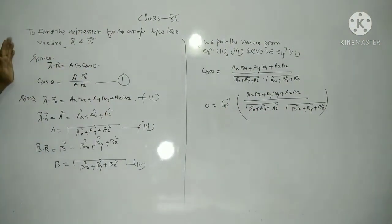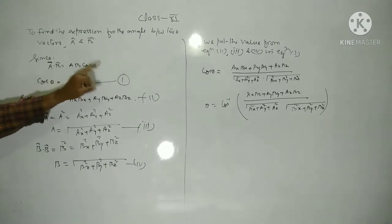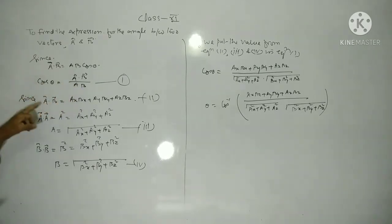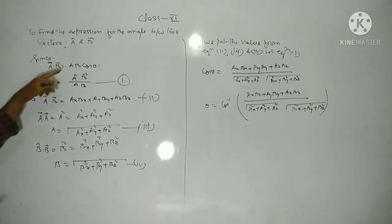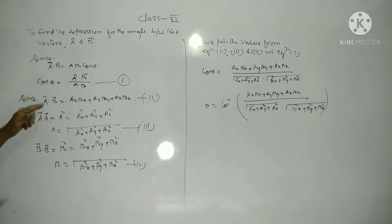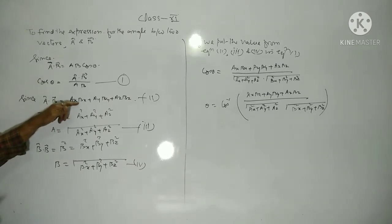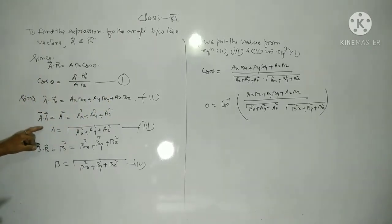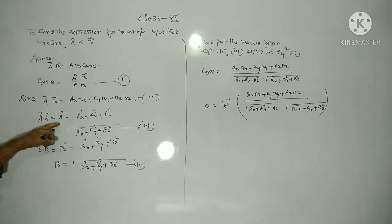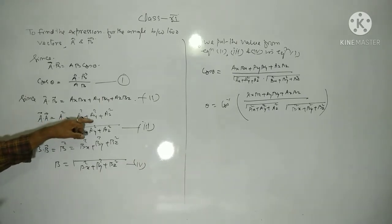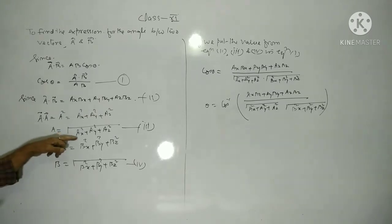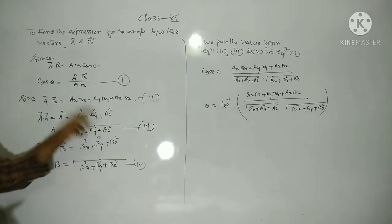If there are two vectors A and B, then A dot B equals AB cosθ, and cosθ equals A dot B upon AB, where A and B are the magnitudes of the vectors. A dot B equals AxBx plus AyBy plus AzBz. And A dot A equals A squared, so A equals under root of Ax squared plus Ay squared plus Az squared.